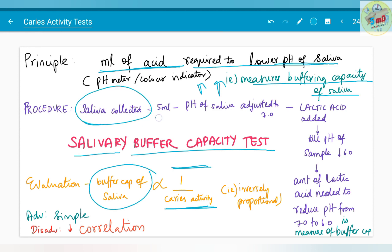Therefore, the buffer capacity of the saliva is measured as follows: saliva is collected, that is 5 ml is collected, and pH of saliva is adjusted to 7.0. Then lactic acid is added till pH of sample decreases to 6.0. The amount of lactic acid needed to reduce pH from 7 to 6 is the measure of buffer capacity of saliva. The advantage is that this test is simple, but the disadvantage is that it has decreased correlation with the caries activity of the individual.